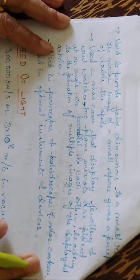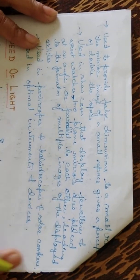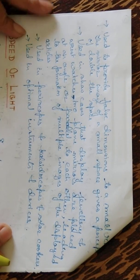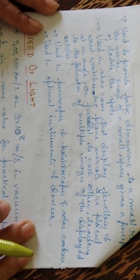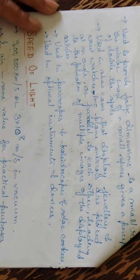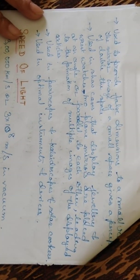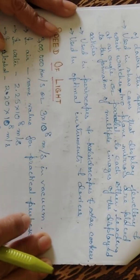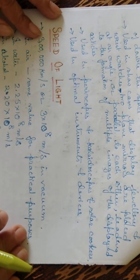It is used by army personnel and scouts for signaling. It is used to provide false dimensions to a small room — the mirror image of a small space gives a perception of double the space. It is used in showcases that display jewelry or wristwatches, where two plane mirrors are placed at an angle or parallel to each other, leading to the formation of multiple images. It is also used in periscopes, kaleidoscopes, solar cookers, and optical instruments and devices.